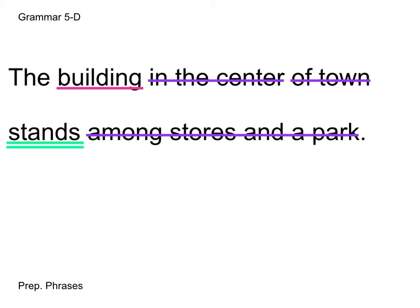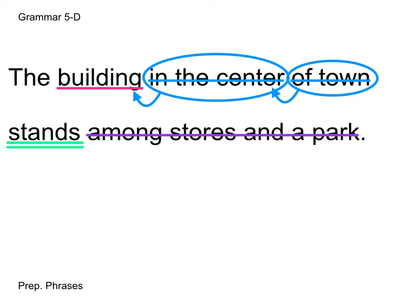Now we can start to think about what these prepositional phrases are doing in this sentence. We'll start with the first one: the building in the center of town. In the center is modifying where the building is, meaning it's acting like an adjective. So I'm going to change that to the adjective color, circle it, and draw an arrow to the modified word. And then of town is going to be another modifier — but what is it modifying? The way to figure that out is to say that prepositional phrase right after the noun you think it might be modifying. The building of town doesn't really make sense, but the center of town does — of town makes a whole lot more sense modifying center. So I circled it and drew that arrow.